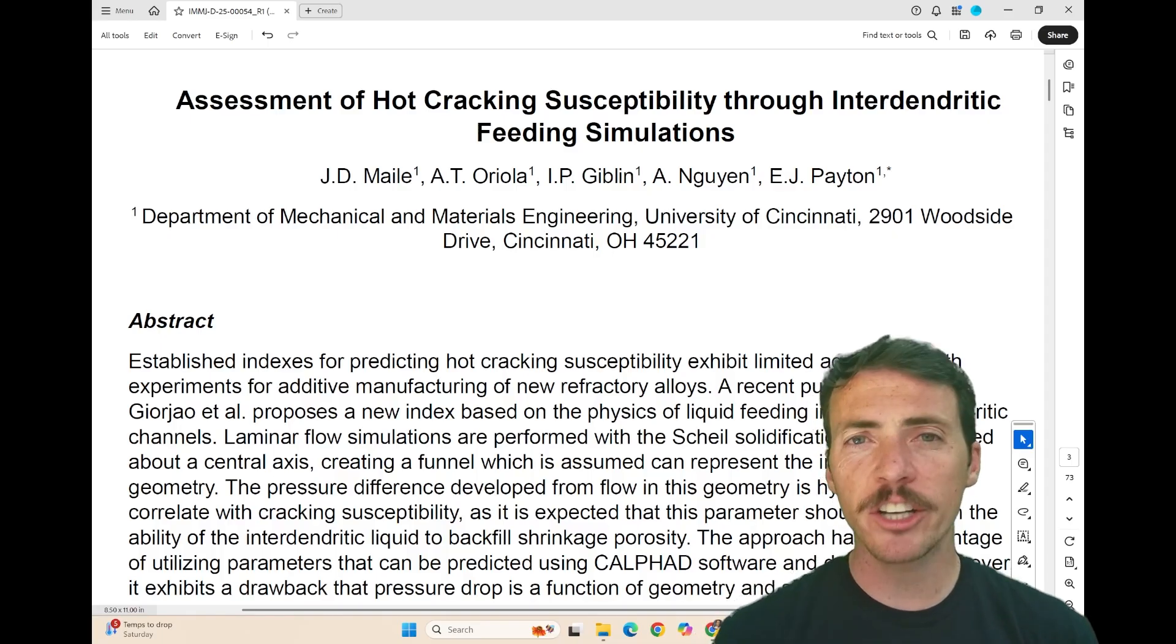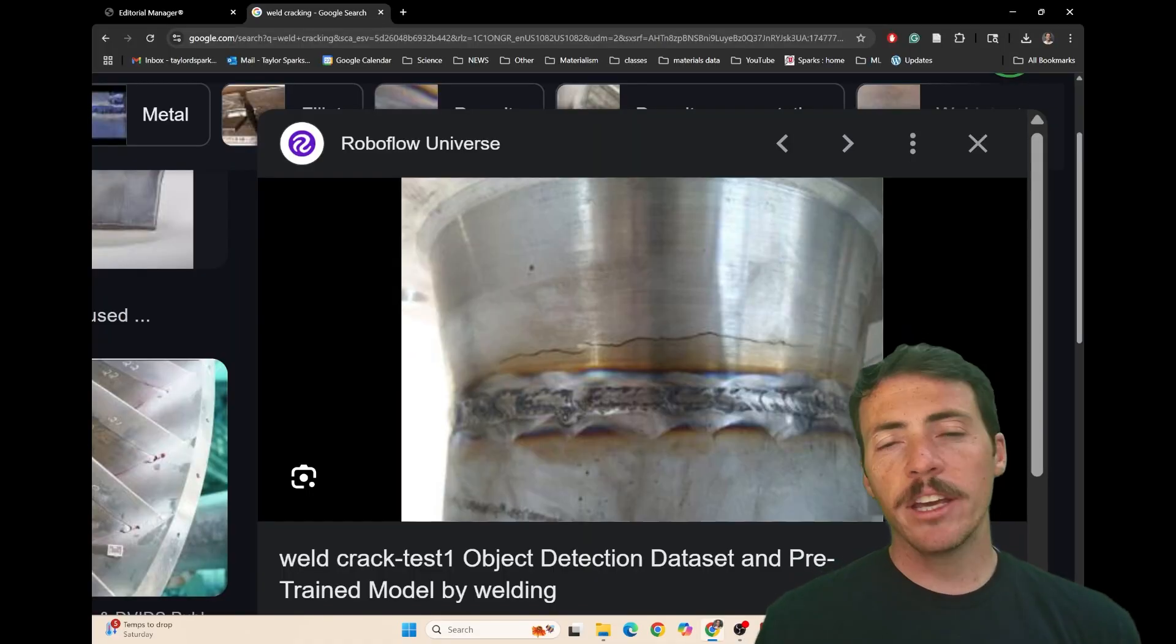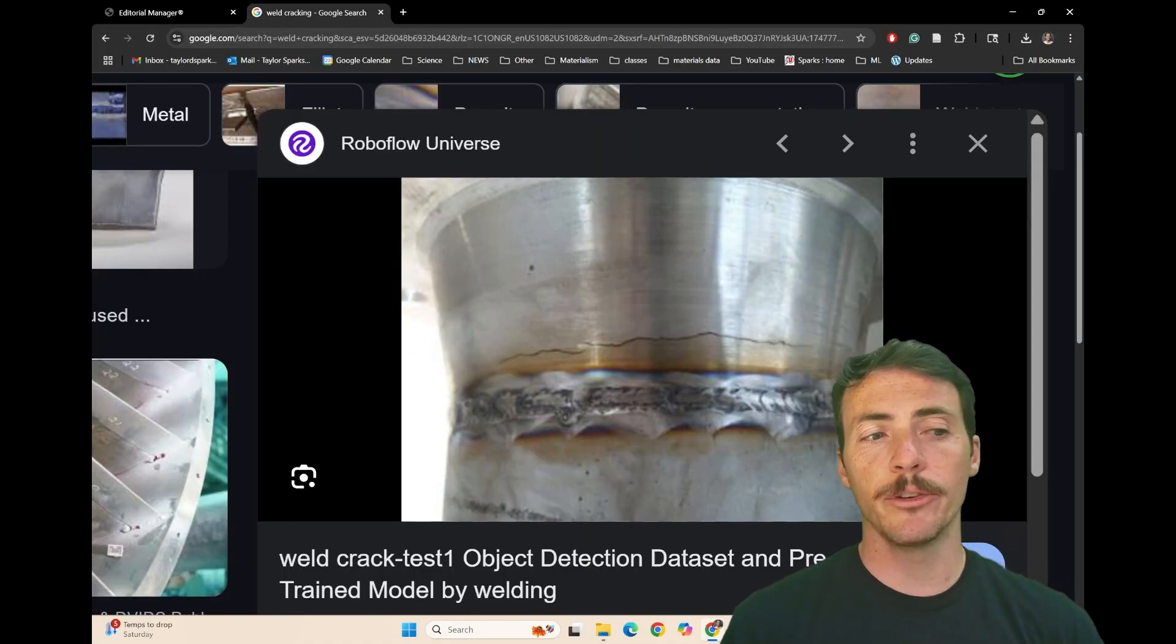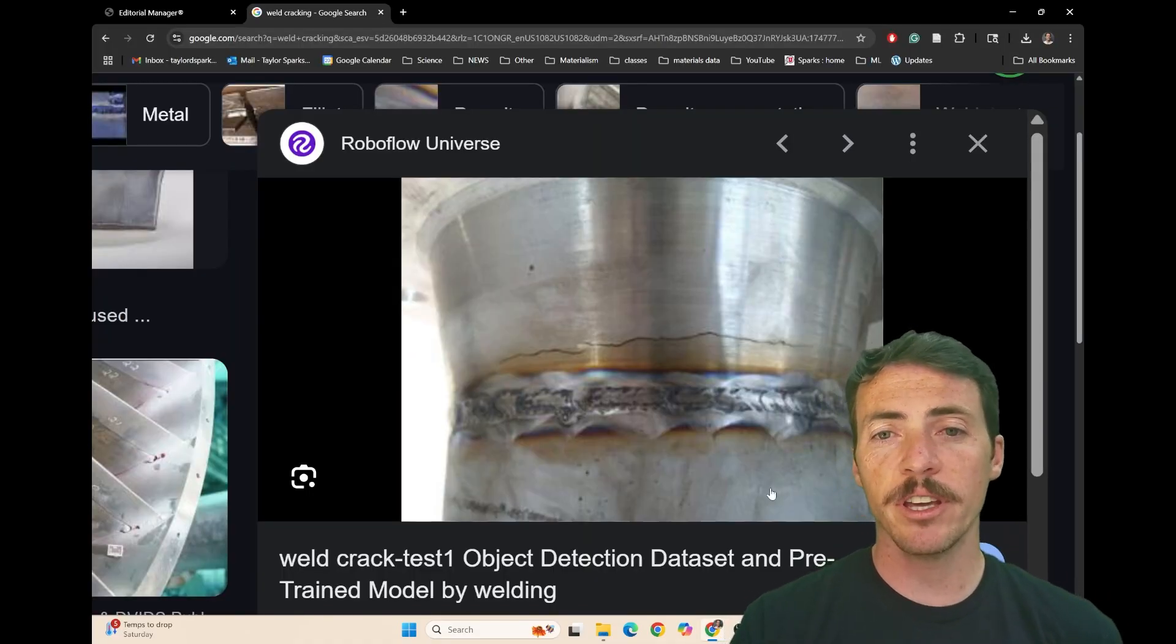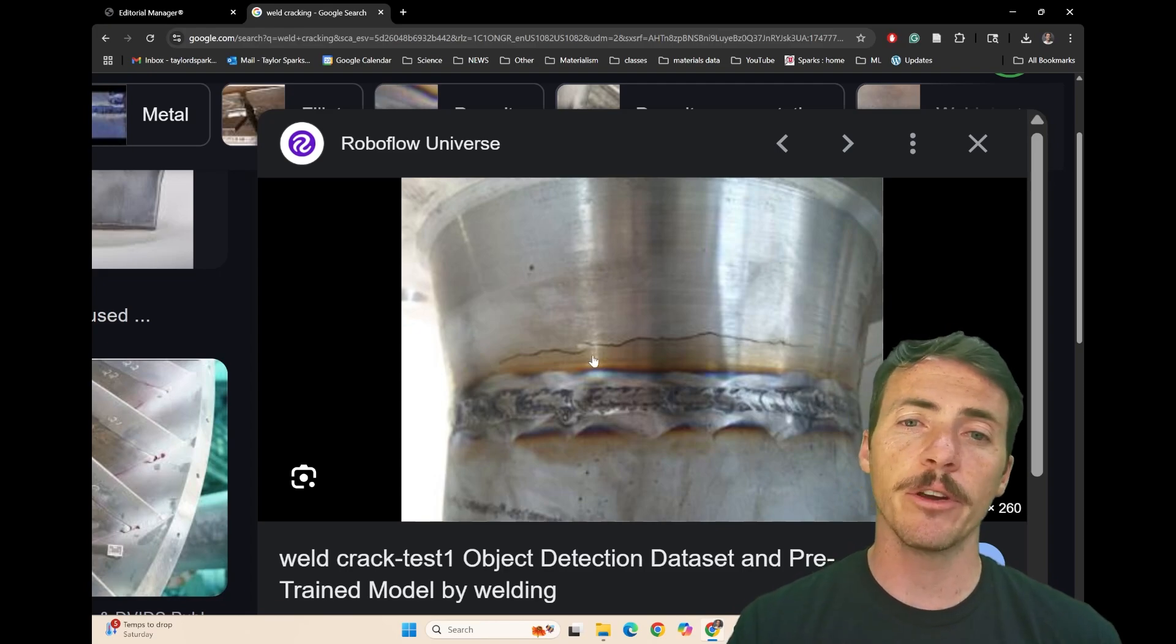Now they're talking about hot cracking, so what is that? Hot cracking is when alloys crack, particularly during welding, casting, or 3D printing, and it is unfortunately a very common occurrence.